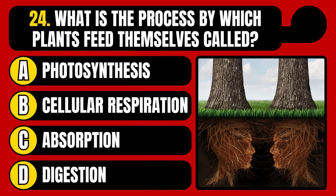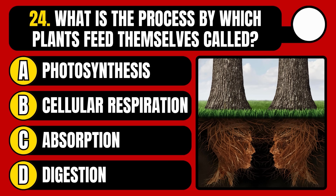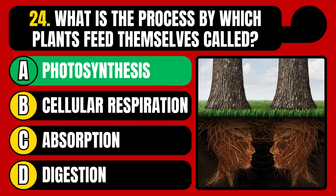What is the process by which plants feed themselves called? Photosynthesis, cellular respiration, absorption, or digestion? The correct answer is option A, photosynthesis.